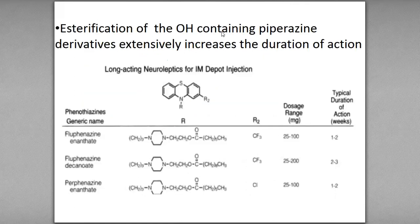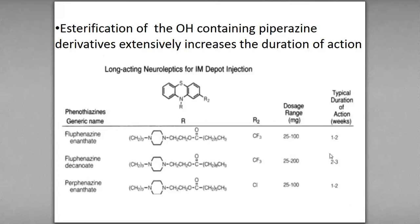Esterification of OH-containing piperidine derivatives extensively increases the duration of action. The esterification of the OH group is responsible for extending the duration of action. For example, with CF3 substitution, dosage range is 25 and duration of action is 1-2 weeks. With acetyl esterification, duration increases to 2-3 weeks.